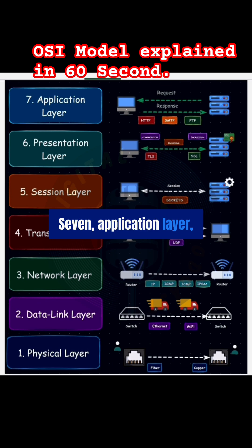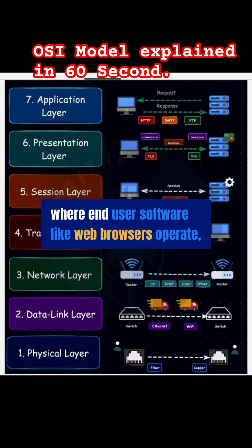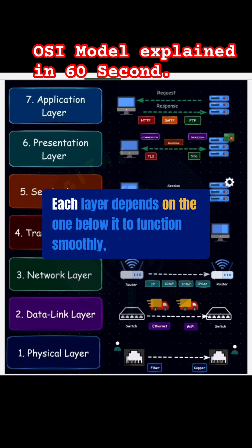Seven, application layer, where end-user software like web browsers operate. Each layer depends on the one below it to function smoothly.